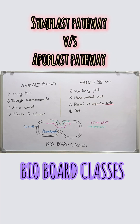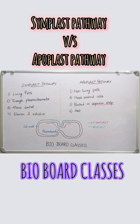In plants, water moves from roots to xylem by two major pathways: the apoplast and the symplast. The symplast route goes through the cytoplasm, moving from cell to cell via plasmodesmata. As you can see here, it is selective and regulated.